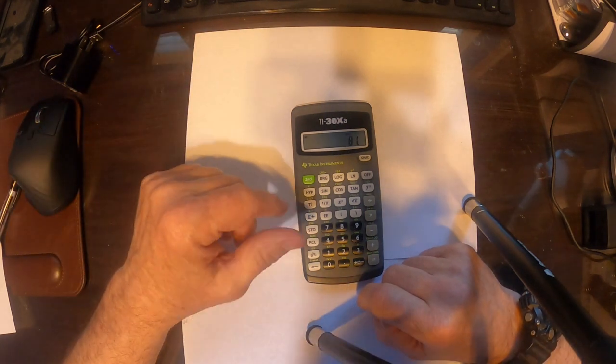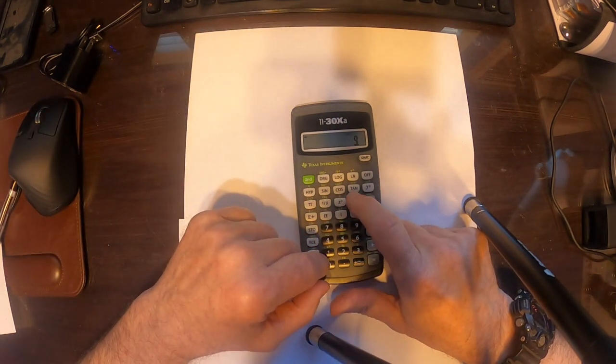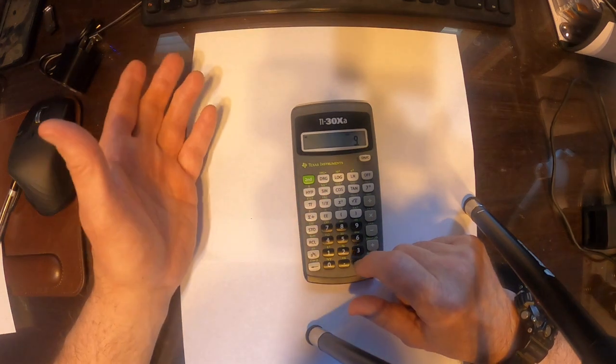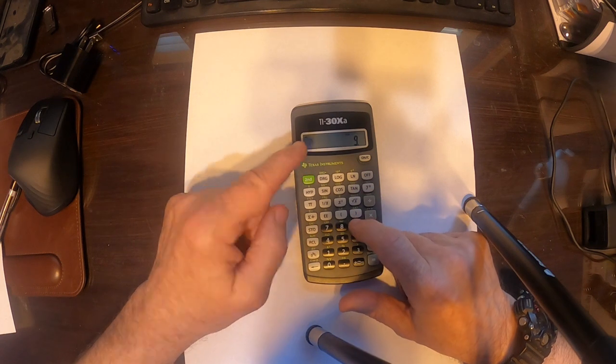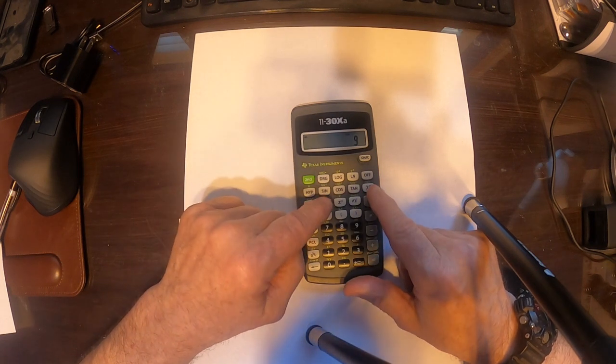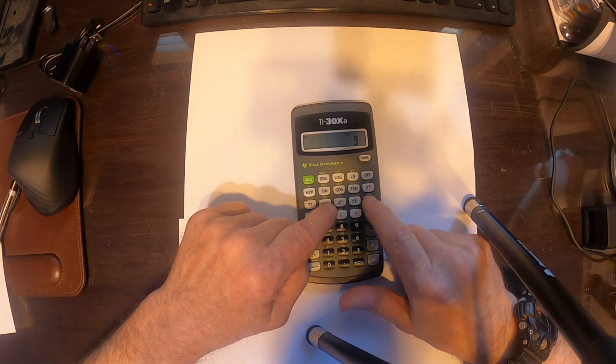If we want to take a root of it, well, square root's easy, just press that number right there. But if, let's say we wanted to take like a cube root or something like that, well, you put the number in first, let's say 9, then you want to take the cube root of it. So you can see that X root of Y above the Y to the X,